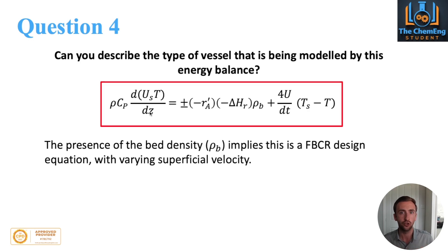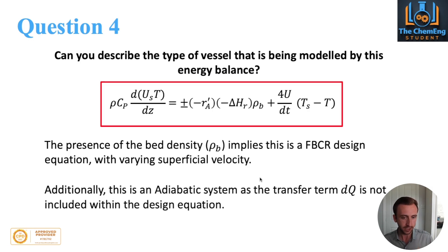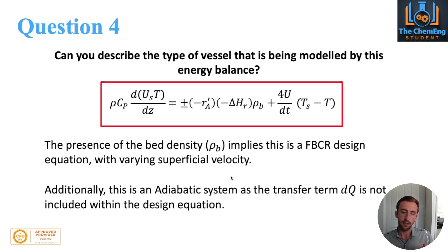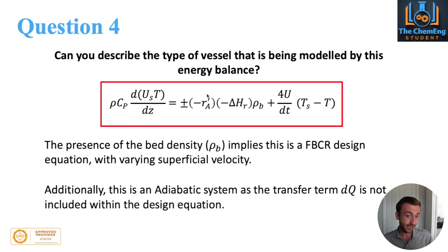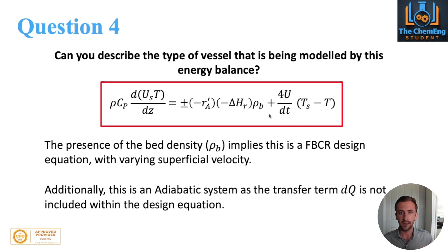These are things you can explain during the interview that will really set you apart from other candidates. Additionally, as mentioned in the previous answer, adiabatic systems imply there is no heat or mass transfer between the reactor and the surroundings. So we're actually missing the transfer term within this balance — we're a term down, and that term is the dQ term. Because we don't have that, the equation basically governs an adiabatic fixed bed catalytic reactor.